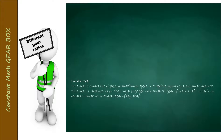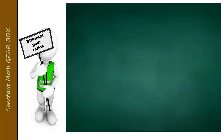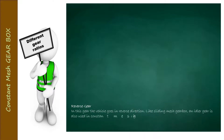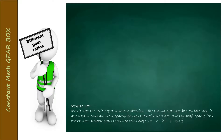Reverse gear: in this gear the vehicle goes in the reverse direction. Similar to the sliding mesh gearbox, an idler gear is used in the constant mesh gearbox between the main shaft gear and the lay shaft gear to form the reverse gear. Reverse gear is obtained when the dog clutch engages with the gear on the main shaft that is paired with the idler gear.